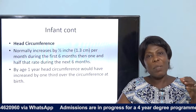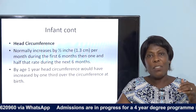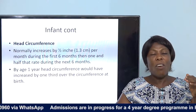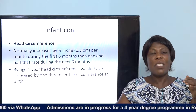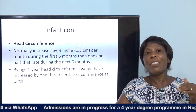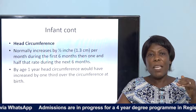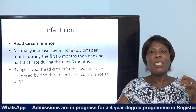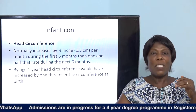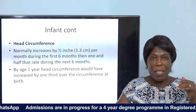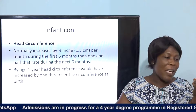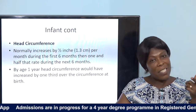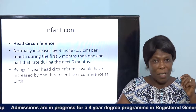When you give birth to a child the head is bigger than any other part of the body, but as the baby grows the head circumference decreases relatively. By age one year head circumference would have increased by one-third over the circumference at birth. With length and weight, they increase, but the head circumference growth rate decreases relative to the body.